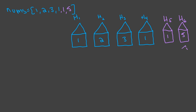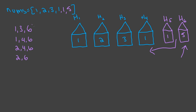Let's say we want to rob house 6 because they have super valuable stuff. From house 6, we need to know what the max is before that, because there are a lot of options to get there. For example, we could go house 1 → house 3 → house 6, or house 1 → house 4 → house 6, or house 2 → house 4 → house 6, or house 2 → house 6. There are a lot of different combinations, and calculating them for each and every house would take a lot of time.